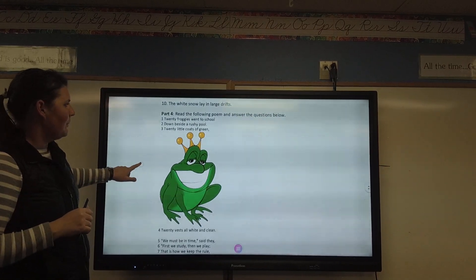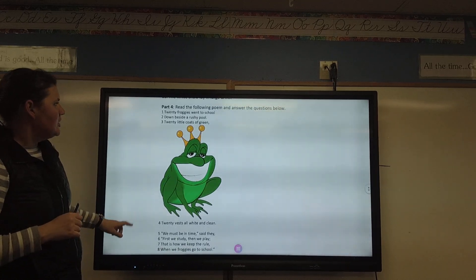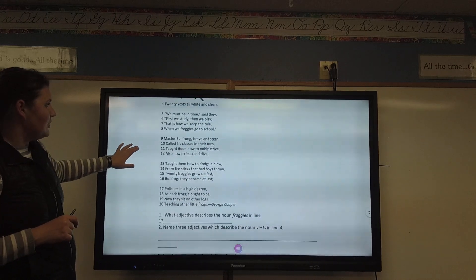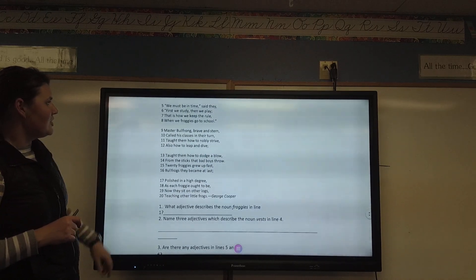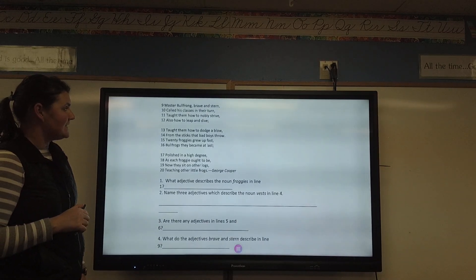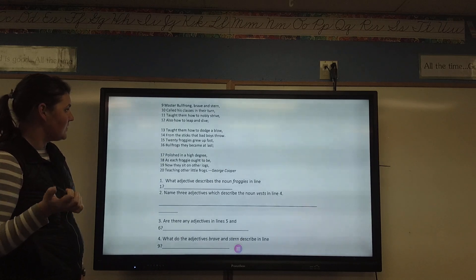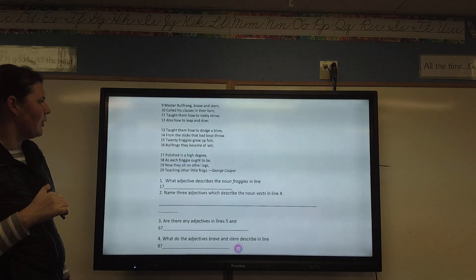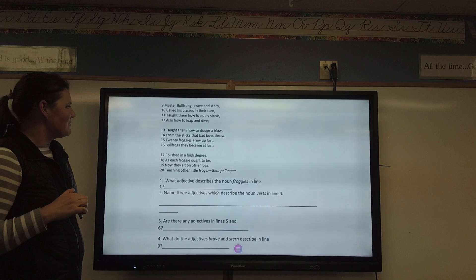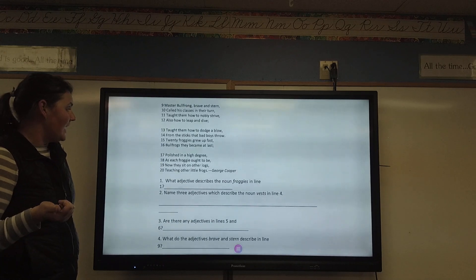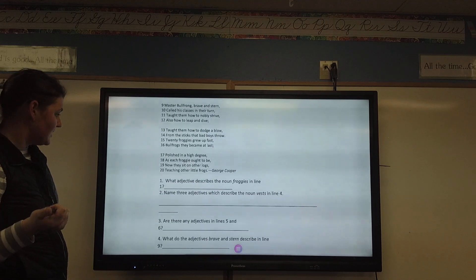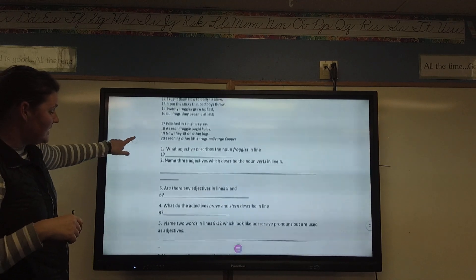Going down to part four. Read the following poem and answer the questions below. The twenty froggies went to school down beside the rushy pool. Twenty little coats of green. Twenty vests all white and clean. We must study, be in time, said they. First we study, then we play. That is how we keep the rule when we froggies go to school. Master bullfrog, Ravenstern, called his classes in their turn. Taught them how to nobly strive, also how to leap and dive. Taught them how to dodge a blow from the sticks that bad boys throw. Twenty froggies grew up fast, bullfrogs they became at last. Polished in a high degree as every froggie ought to be. Now they sit on other logs teaching other little frogs.